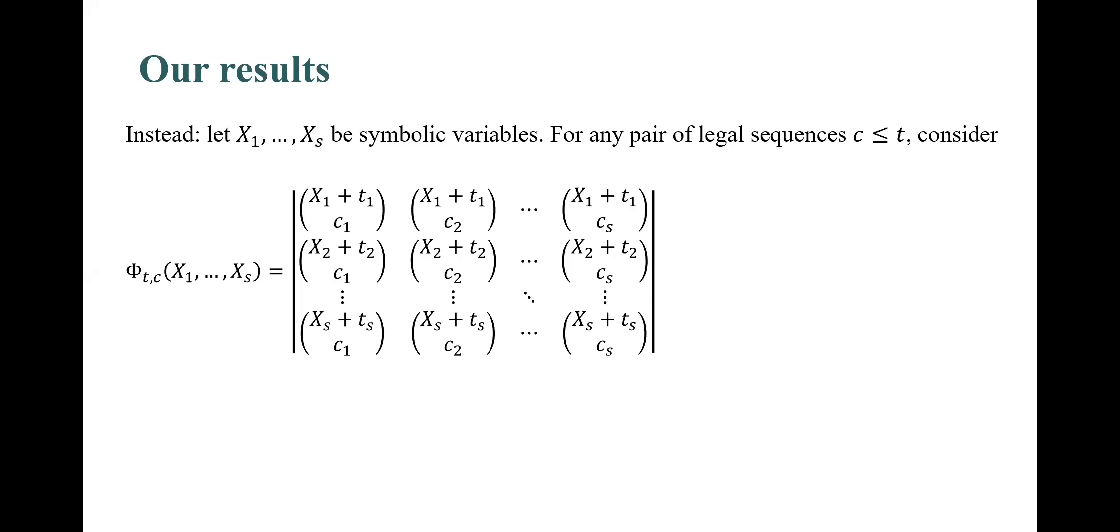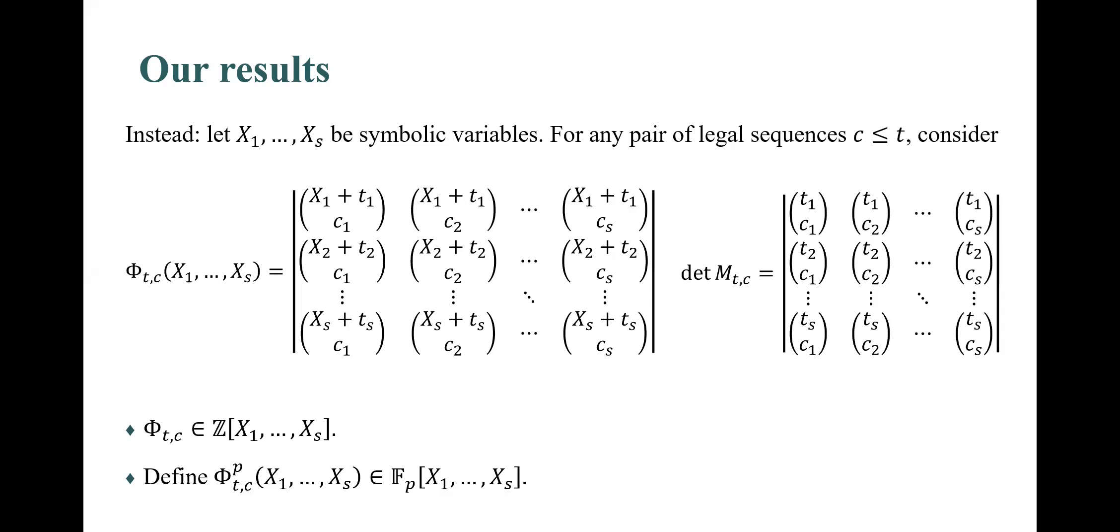Therefore, we took a different approach. Instead of considering a single determinant for any pair of legal sequences, we did the following. Let x_1 to x_s be symbolic variables. Then define F_t_c of x_1 to x_s to be the determinant that's presented in this slide. Comparing F_t_c to the determinant of M_t_c, we can see that they are similar. But F_t_c is an integer polynomial, while the determinant of M_t_c is an integer. For a prime p, we define the polynomial F_t_c mod p to be F_t_c when its coefficients are taken modulo p.